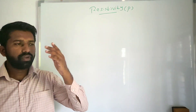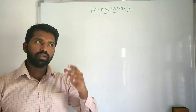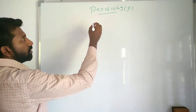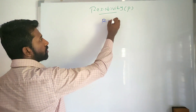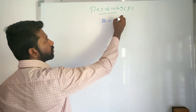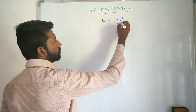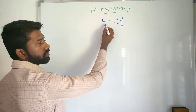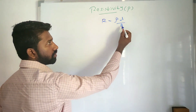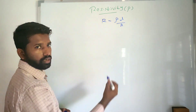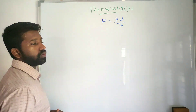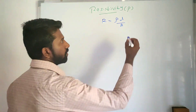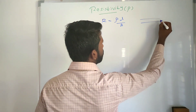We already studied a formula for resistance. What is that formula? R is equal to rho L by A. In that, R is resistance, L is length, A is area cross-section, and rho is resistivity. That means I am going to consider a wire like this.